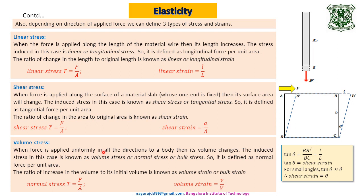The third type is volume stress. When force is applied uniformly in all directions to a body, its volume changes. The induced stress is known as volume stress, normal stress, or bulk stress, defined as normal force per unit area. The ratio of change in volume to original volume is known as volume strain: small v divided by capital V. In all three cases stress is written as F/A, but the nature of the force differs: linear in the first case, tangential in the second, and normal in the third.